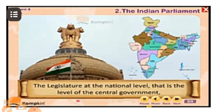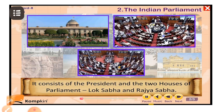Dear students, what is parliament? The legislature at the national level, that is the level of the central government, is called parliament. It consists of the president and the two houses of parliament: Lok Sabha and Rajya Sabha.